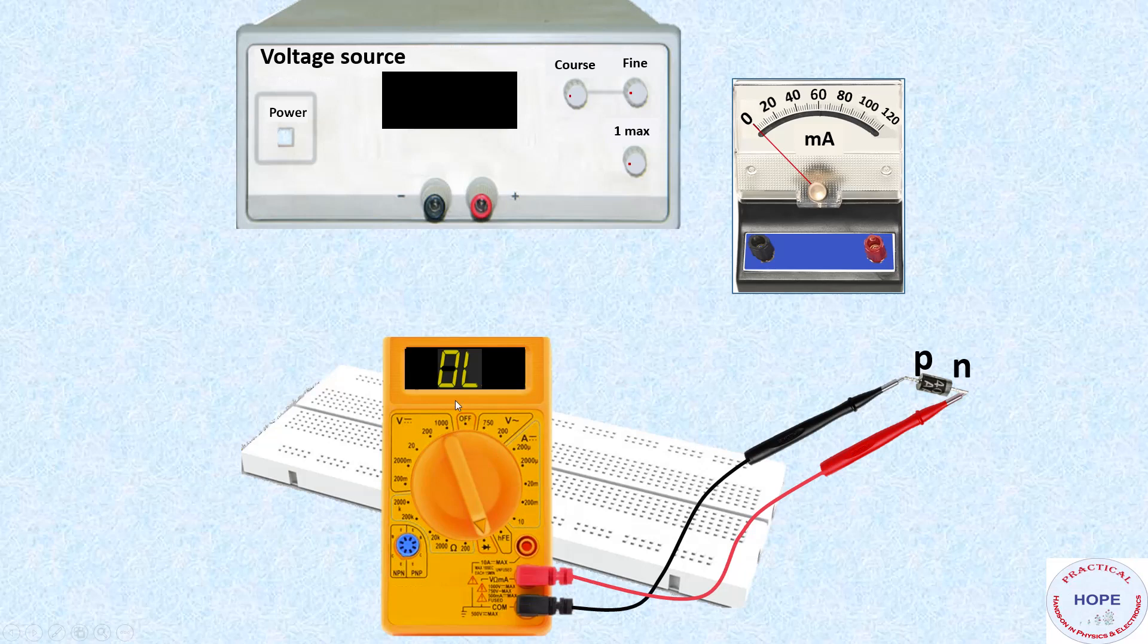Here multimeter is showing open circuit condition since the diode is reverse biased. If we change the polarity of the diode such that its p-side is connected to the positive of the multimeter and n-side to the negative terminal, then multimeter reading should be between 0.5 to about 0.7.